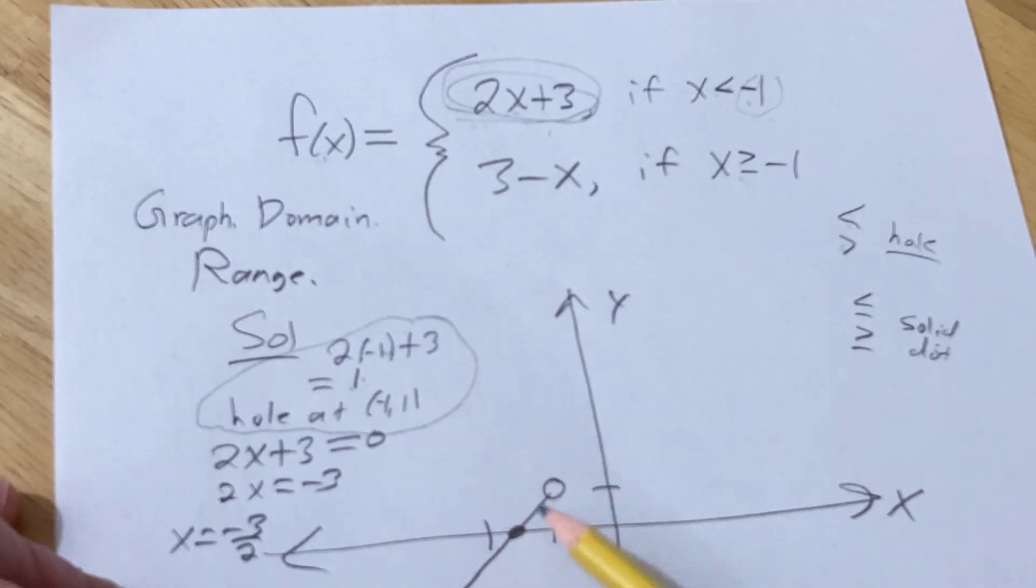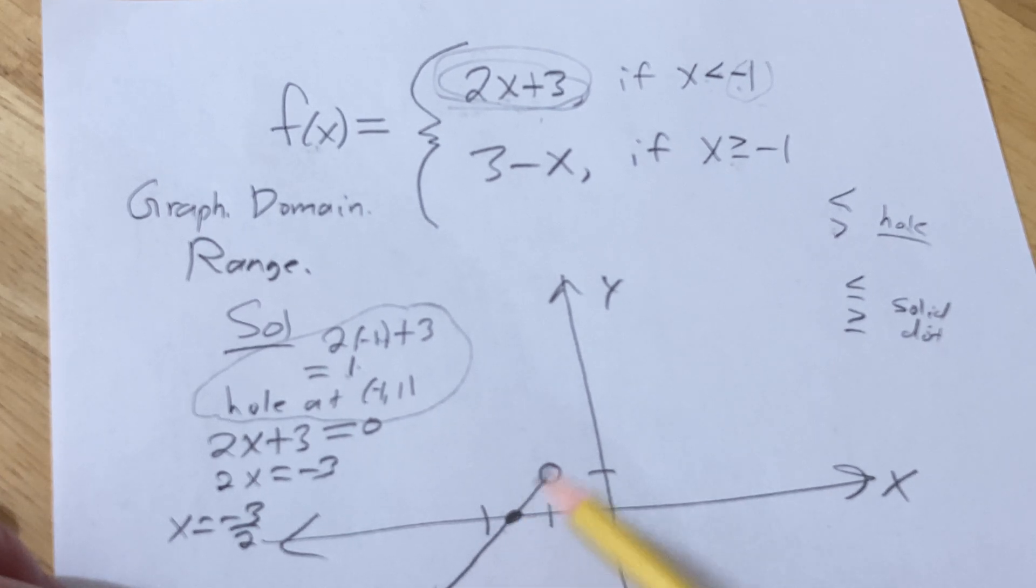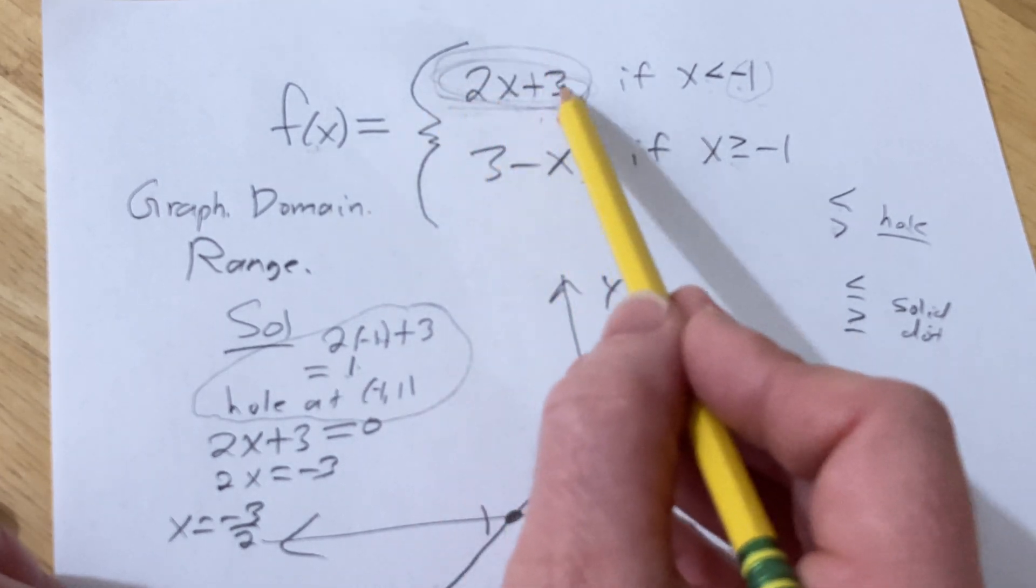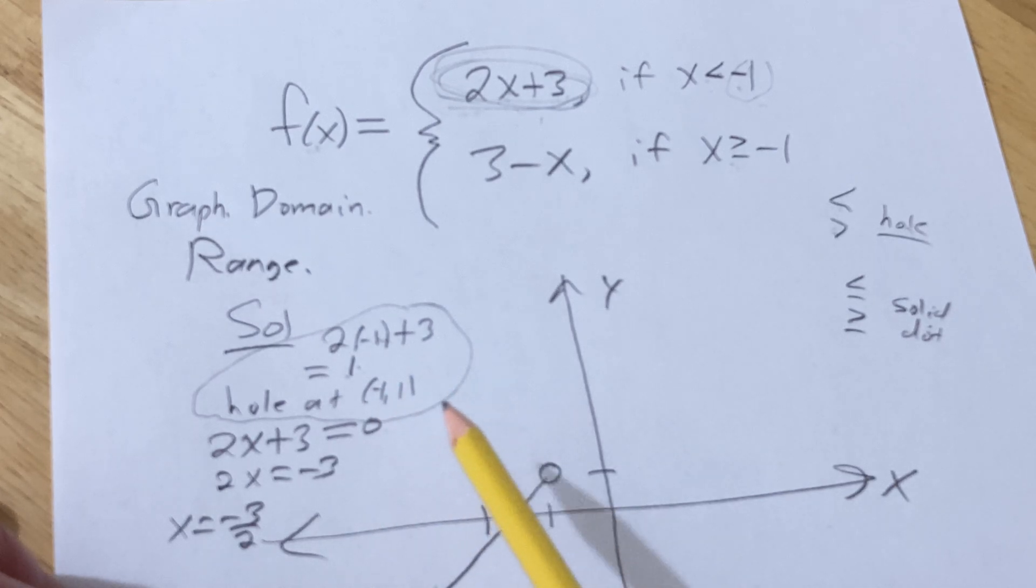Then, we realize it has a positive slope, so we know it's going to go up like this. So you have to find the x-intercept. So you take the whole thing, which is your y, and you set it equal to 0. Remember, to find any intercept, you set the other one equal to 0. To find the x-intercept, you set y equal to 0. To find the y-intercept, you set x equal to 0. We got negative 3 halves, which is really negative 1.5, so there it is.